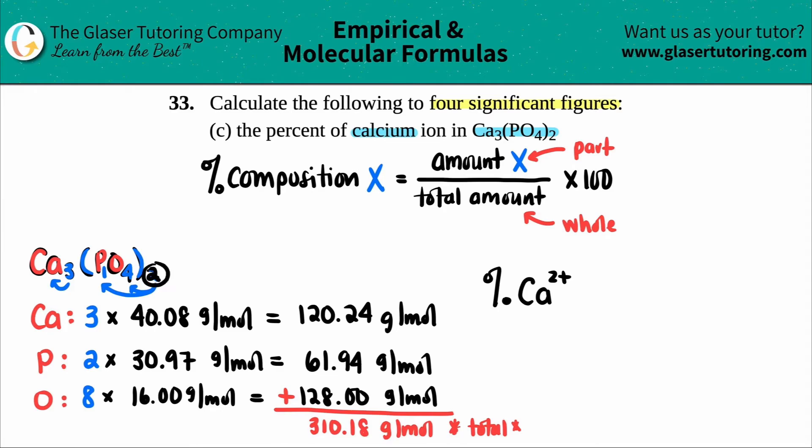You could also know this by knowing that all group 2 metals are a plus 2 charge. But it doesn't matter that you have this. Your answer is not going to change whether you put the 2 plus or not. I'm just going to put the 2 plus because they did say the ion.